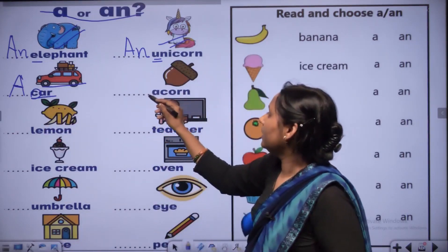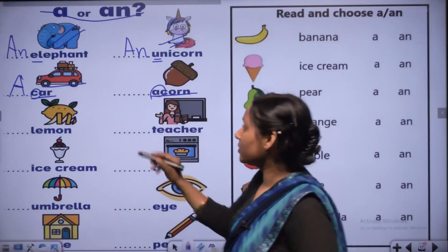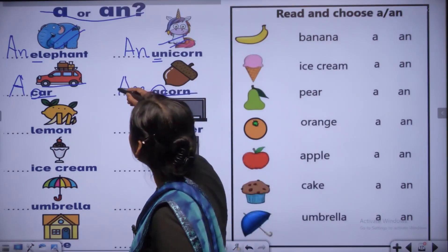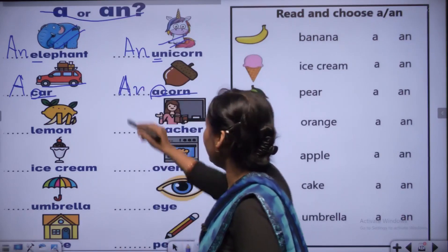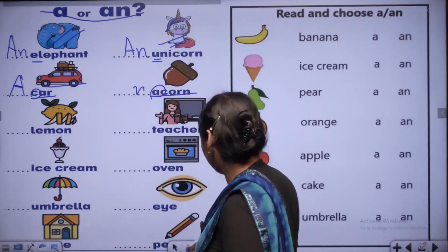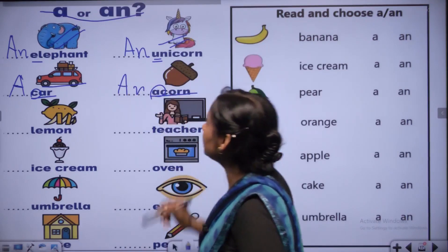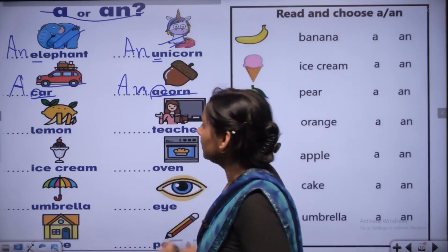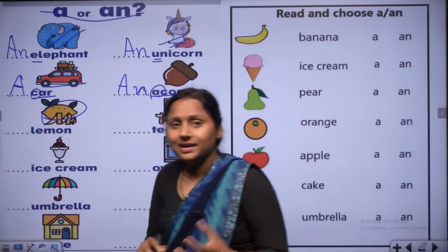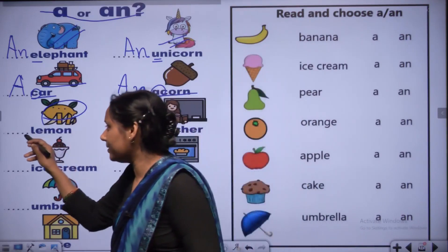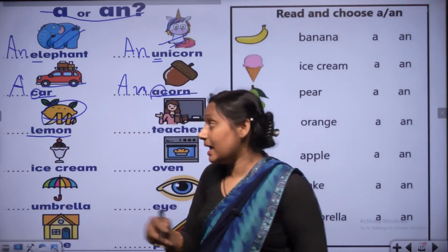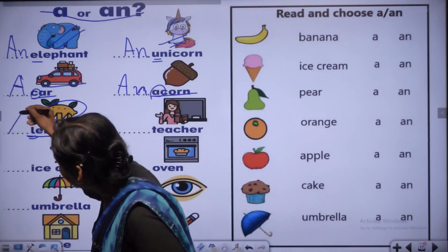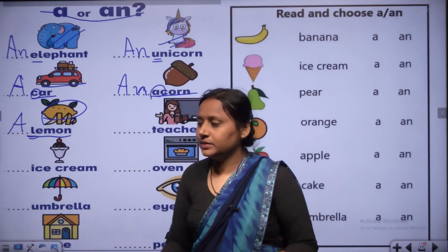This is a cone - A is a vowel sound, so we use AN - an igloo. This is a yellow color lemon - L, E, M, O, N. L is consonant, so we use A - a lemon.